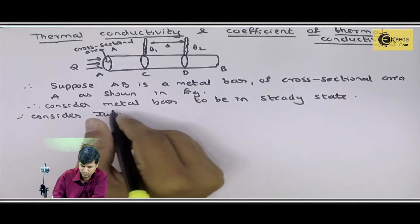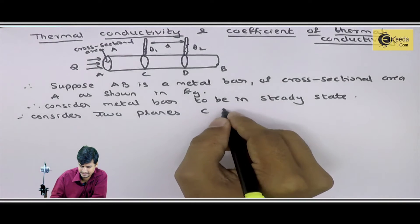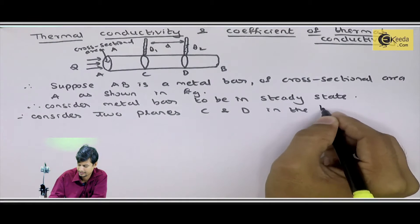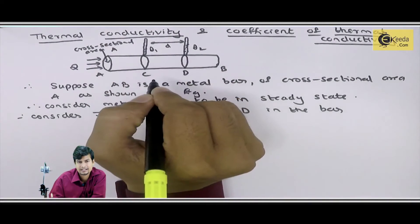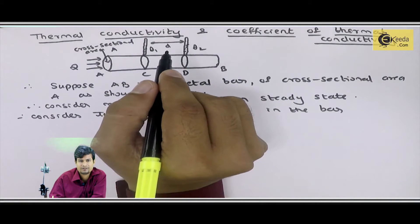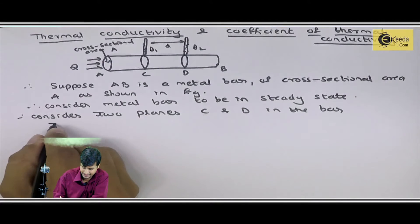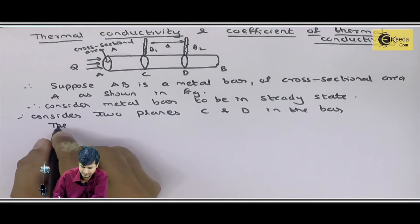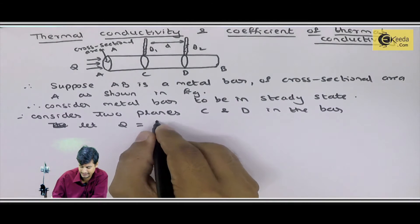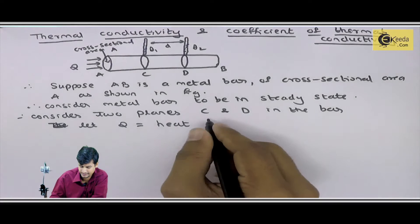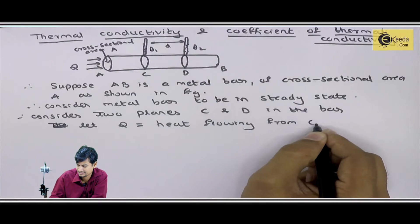Consider two planes C and D in the bar. I have considered two different planes — one C and one D — and placed thermometers there to measure the temperature in both planes. Let Q be the heat flowing from C to D.